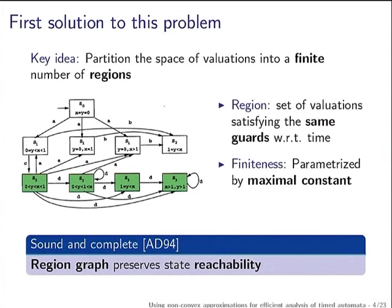This immediately says we need an effective way to handle this uncountably infinite space of clock valuations. That is the challenge in this automaton. What do Alur and Dill say? They take some constant from the automaton and then based on that they partition this infinite space into a finite number of regions.